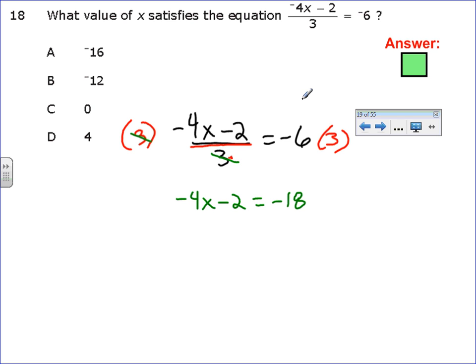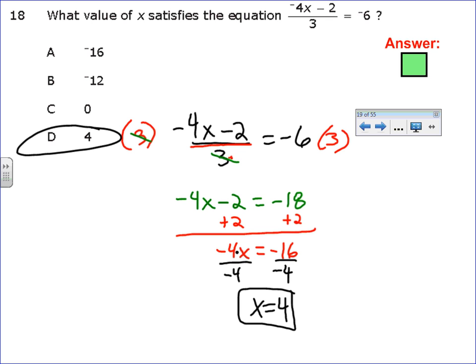Negative 6 times 3 is negative 18. Now, I need to get X by itself. I want this 2 to go away. It's negative, so I'm going to add 2 to both sides. That gives me negative 16. I want to get X by itself. It's being multiplied by negative 4, so I divide both sides by negative 4. And X is 4, which is C.